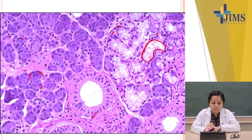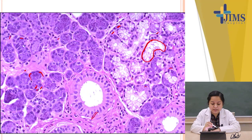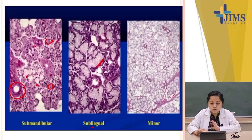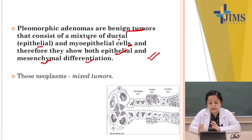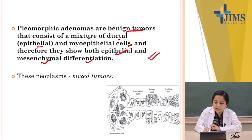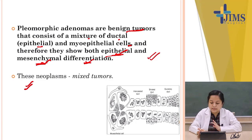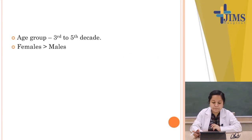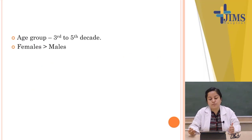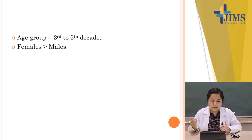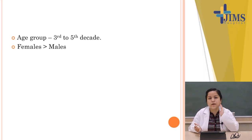It is a benign tumor involving both epithelial cells and myoepithelial cells, hence showing epithelial and mesenchymal differentiation — this is why it is called a mixed tumor. The typical age group is 30 to 50 years, and patients usually present with a swelling.